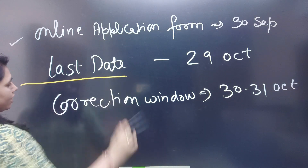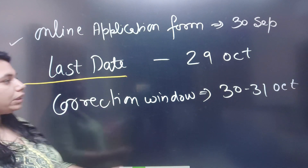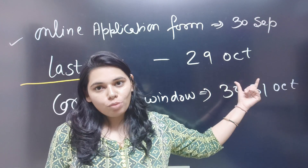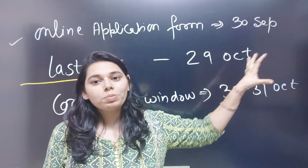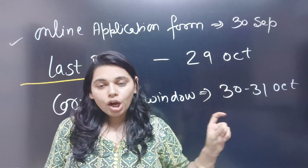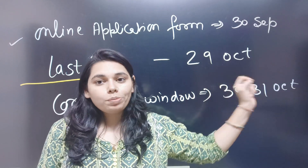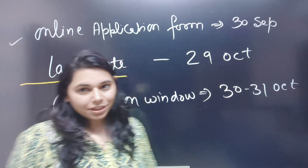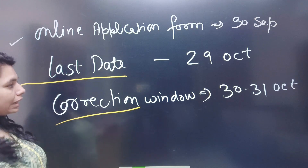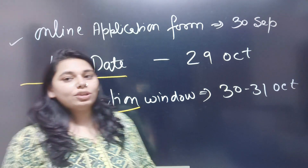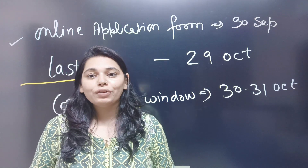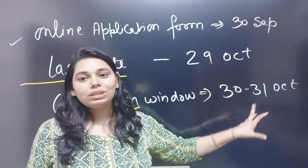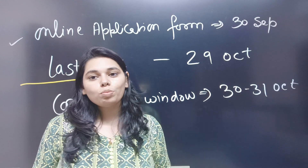If you want to know about the last date, the last date of the form is the last date. Students who are interested should fill the form by the first date. After that, if you have made a mistake, the correction window will open on 31 October.